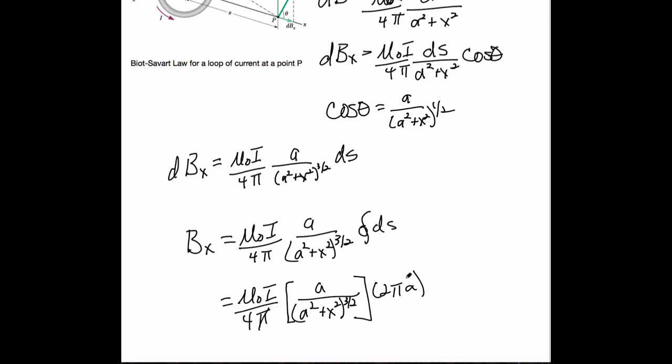So look, pi's drop out, I'm going to end up with A squared. This two cancels with one of the twos there. Let's scroll a little bit.